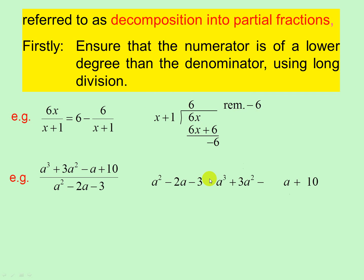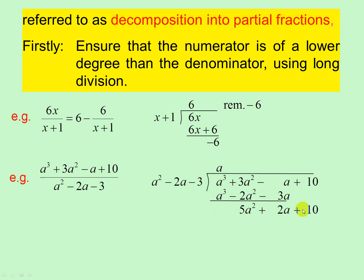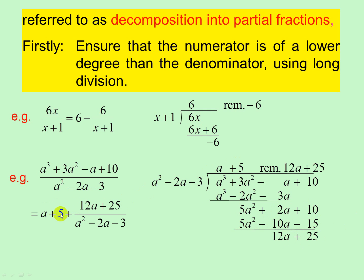Here's another one: third degree over second degree, so we must divide. a squared into a cubed gives you a. Multiply. Change the sign on the bottom line and add — we get 5a squared plus 2a. Bring down. a squared into 5a squared gives you 5. Multiply. Change the sign and add: that becomes 12a, and 10 plus 15 is 25. There is our remainder. So the result is a plus 5, plus the remainder over the denominator. We leave that for somebody else to do.